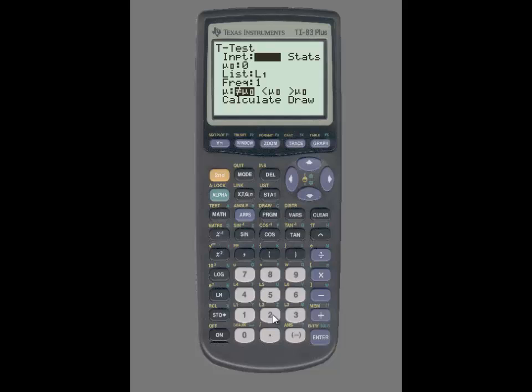Since we have summary statistics, I am going to use the right arrow key to highlight Stats and press enter. Next I'm going to enter the value of the null hypothesis, and for this example it was 123.